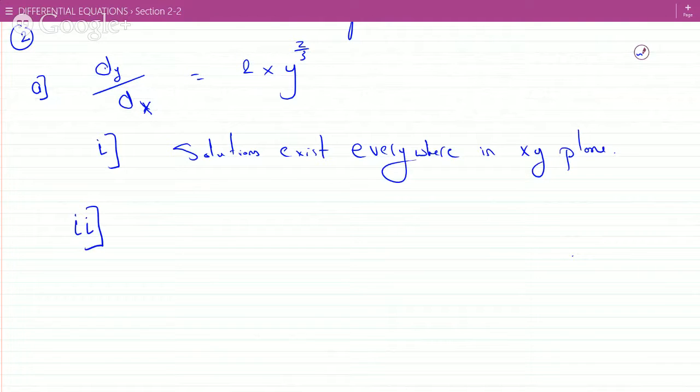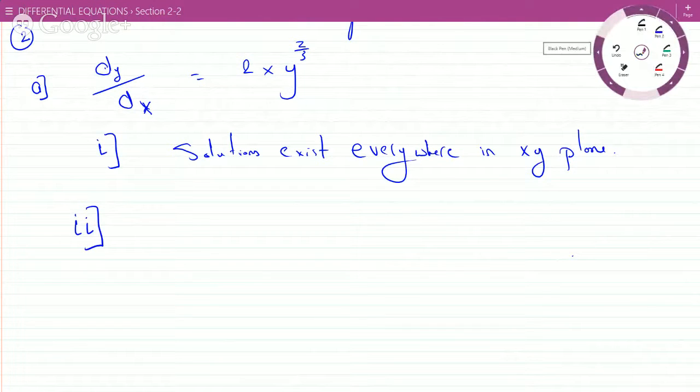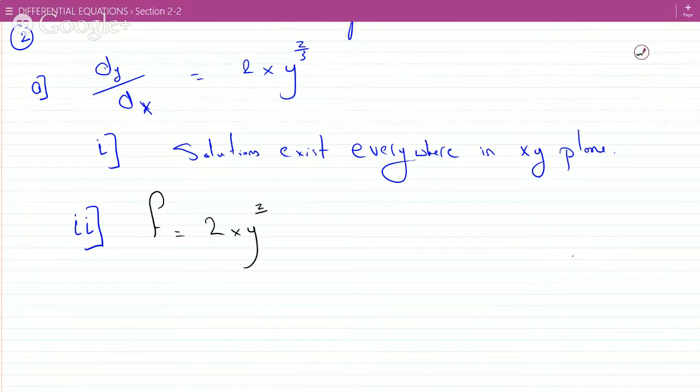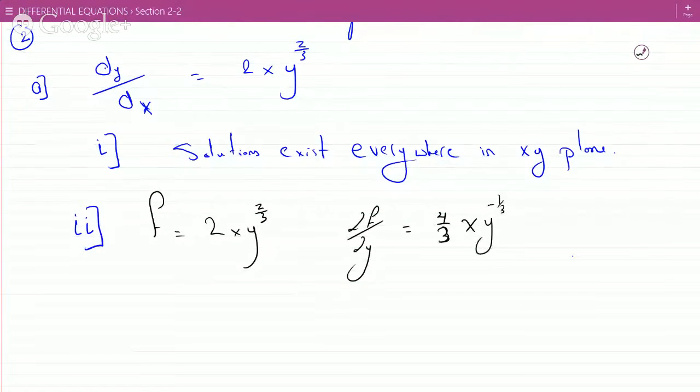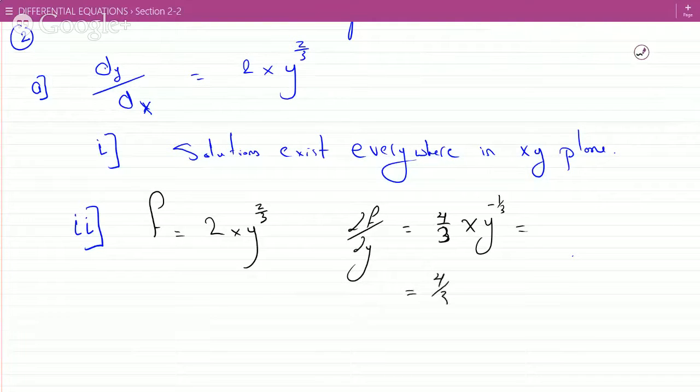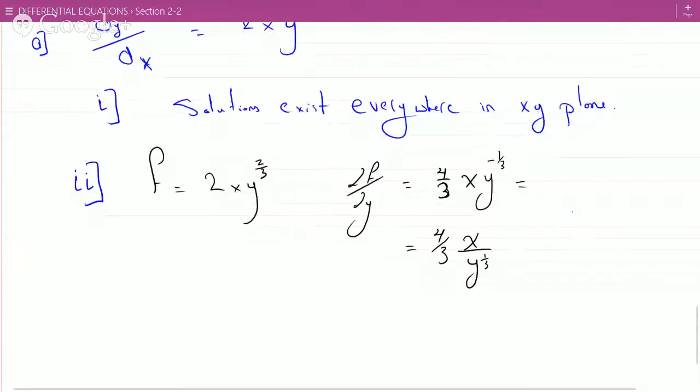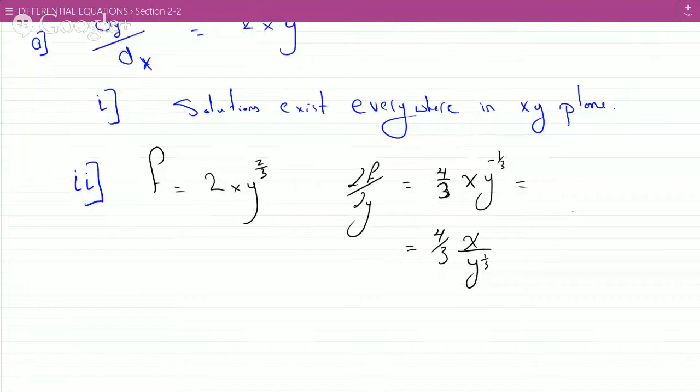Now the existence and uniqueness theorem says that for your f, so f being 2xy to the two-thirds, now this is continuous everywhere. But then try taking the partial of that with respect to y. What do you get? You get four-thirds x y to the minus one over three. And then if you rewrite this, you will get four-thirds x over y to the one-third. That wouldn't work at zero. So this is not continuous at y equals zero.